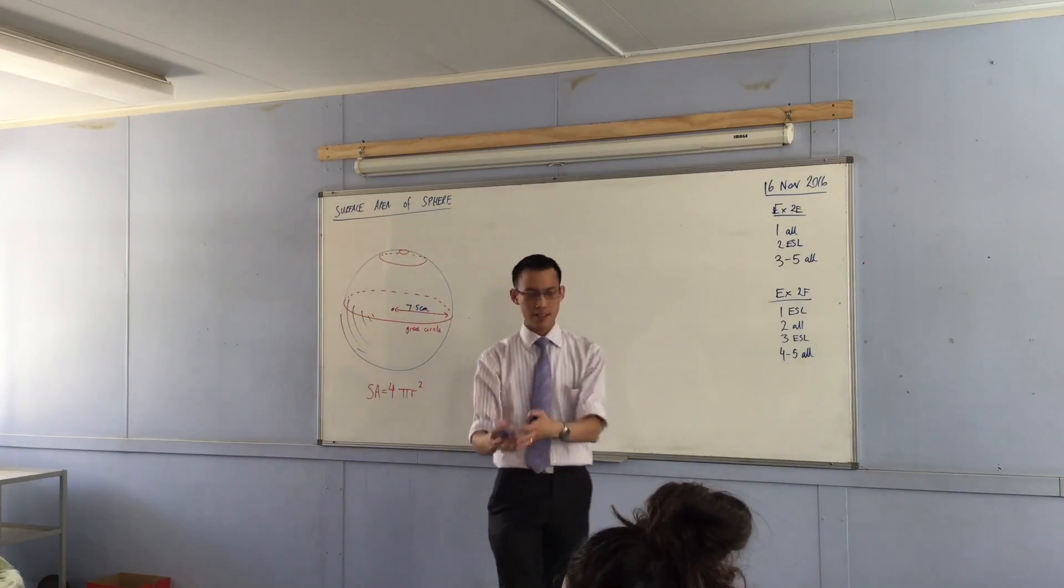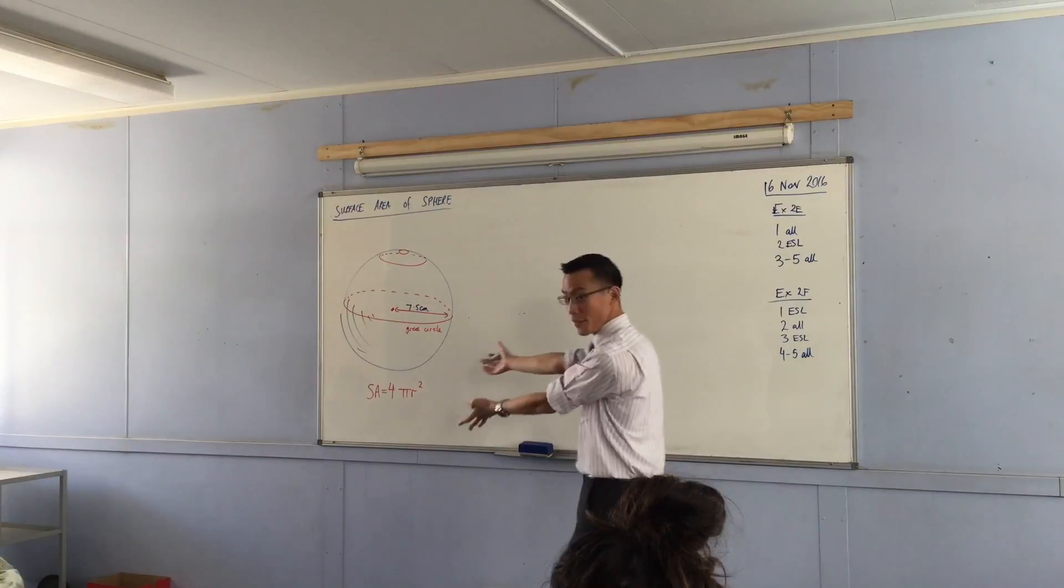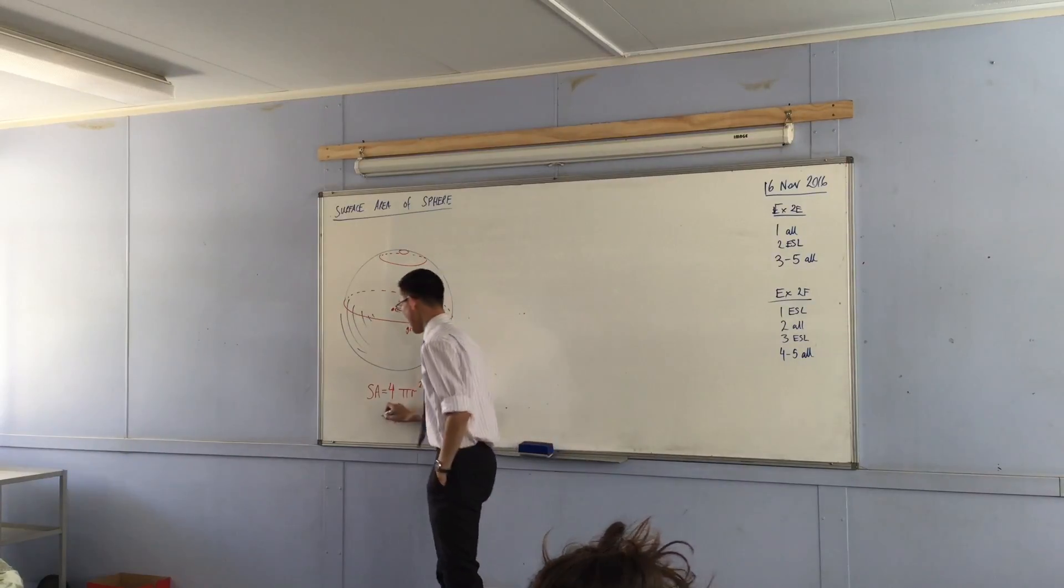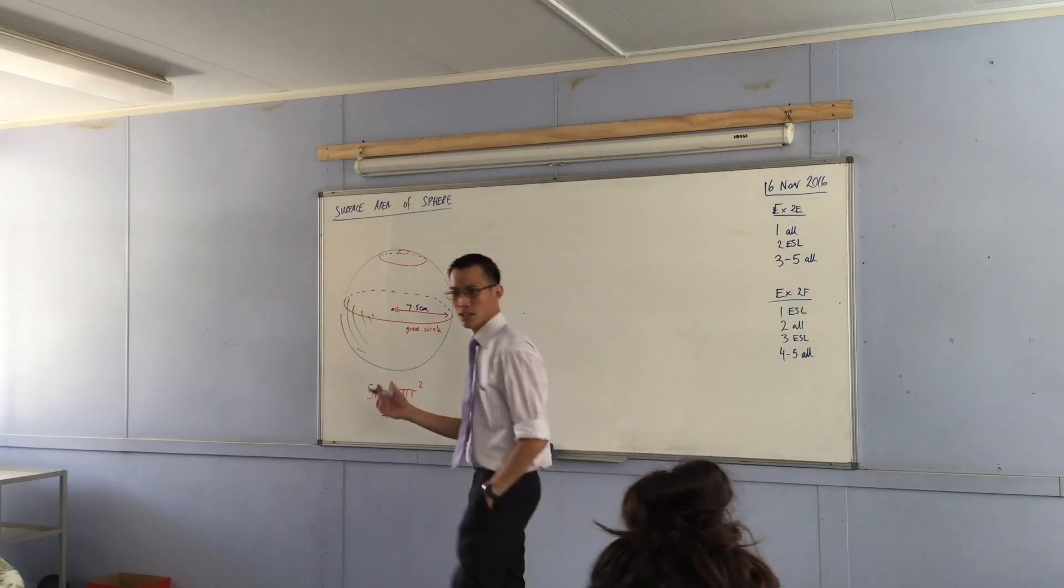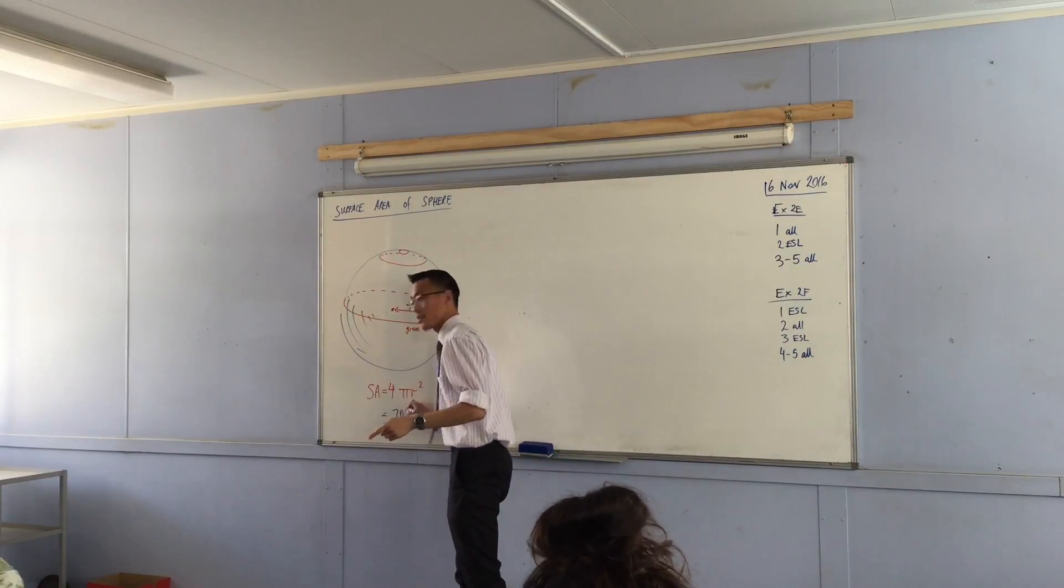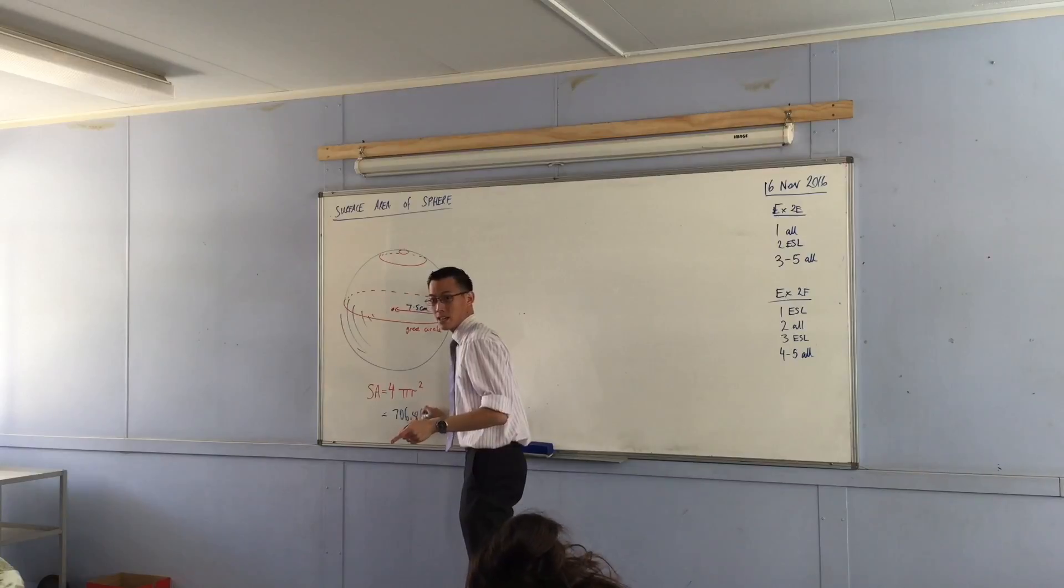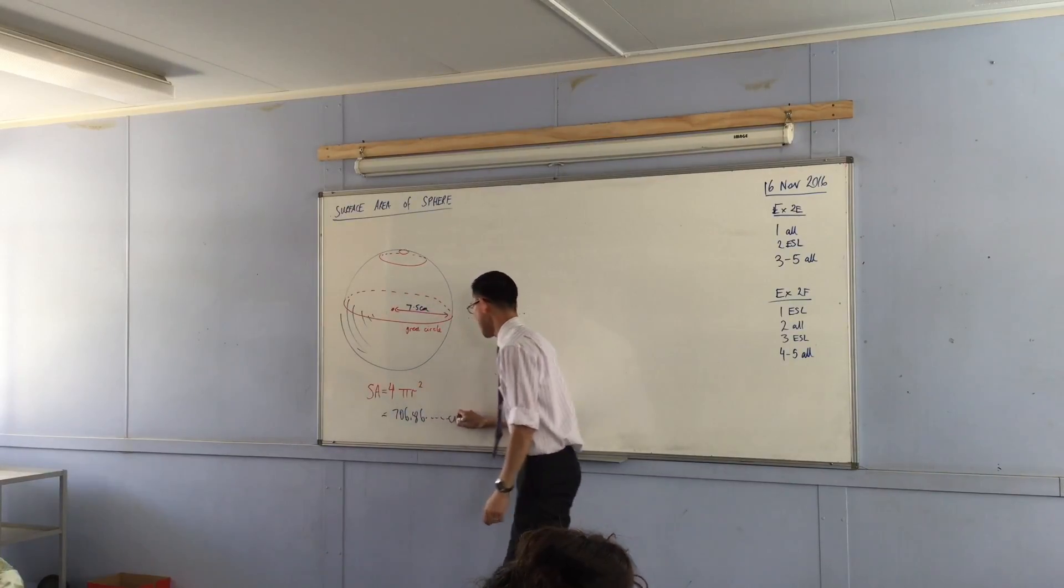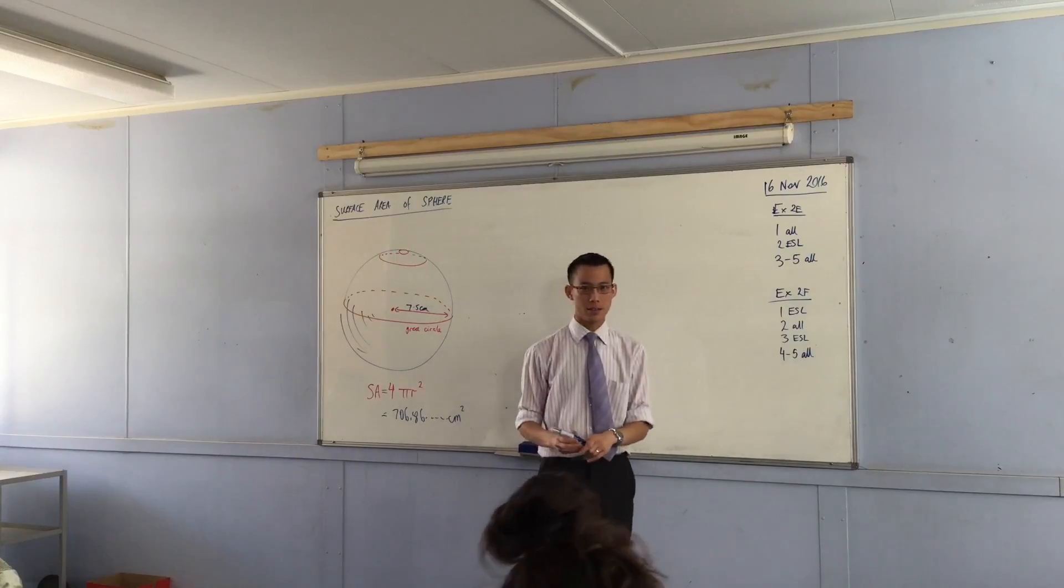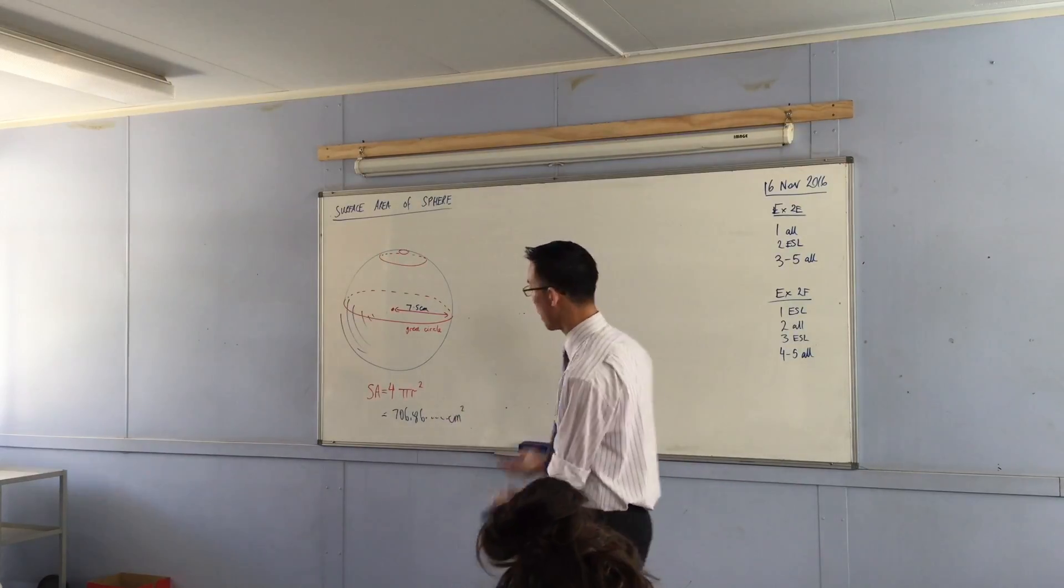So you recognize this is a question about surface area, so you go into the surface area formula. You're punching your numbers, and I think you get 705 something? 706.86, and that's in square centimeters. So you've worked out the surface area of this sphere.